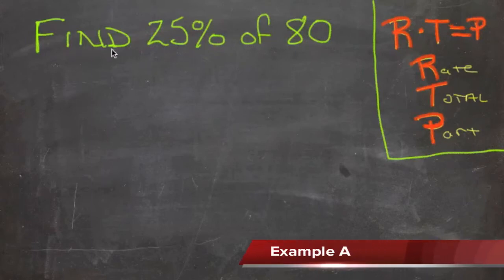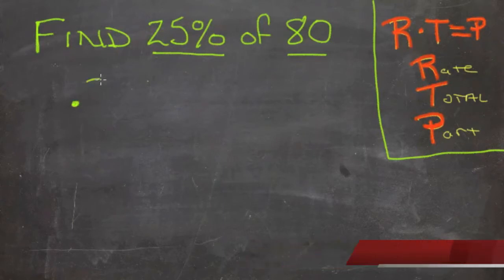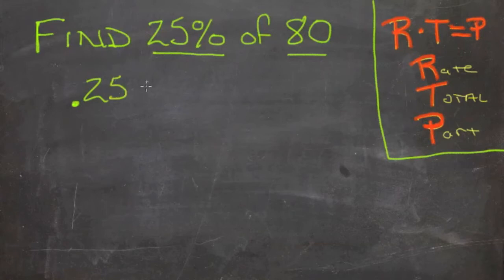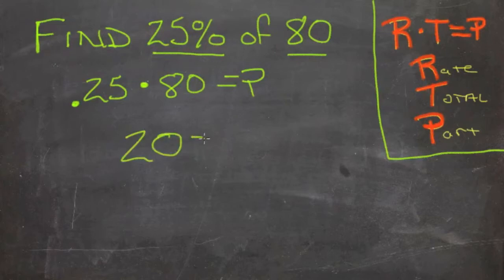In this first question, find 25% of 80, we're given a rate of 25% and a total of 80. We're solving for the part. Substituting into the equation, we get 25%, which is the decimal 0.25, times 80 equals our missing value, the part. 0.25 times 80 is 20, so 20 is our missing part.